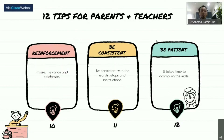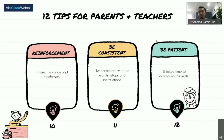Tip number eleven: be consistent with the strategy and instruction you use. You cannot change it from time to time. For example, if you start with video modeling to teach a technique, be consistent with video modeling — don't switch to fading, prompting, or graduated guidance. Be consistent with the technique you use to improve the self-help skill of your child.